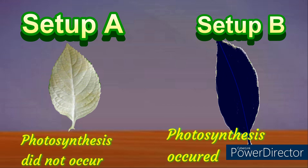Hence, the plant with potassium hydroxide, i.e. Setup A, remains pale white. The plant in Setup B turned blue-black. The plant in Setup A did not receive enough carbon dioxide for photosynthesis because potassium hydroxide absorbed the carbon dioxide.